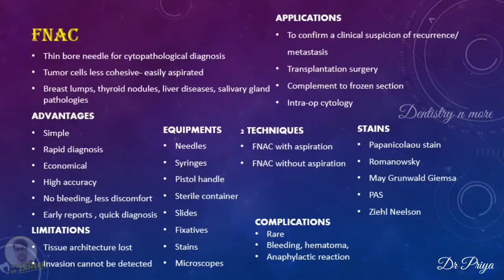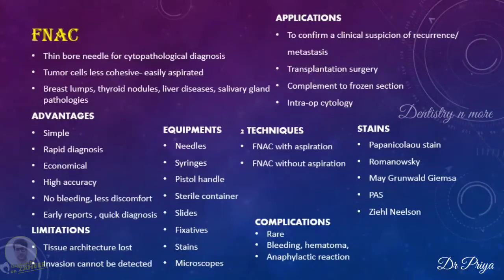The equipment required for FNAC is very simple. You need needles — routinely 22 to 23 gauge needles are used — and syringes of about 20 ml, a pistol handle, and a sterile container containing physiological saline or Hanks' balanced solution. You need slides which are clean, dry, and free of any grease. Fixatives such as 70 to 90 percent ethanol, Carnoy's fixative solution, 10 percent buffered formalin, and glutaraldehyde are commonly used. You also require certain stains and a microscope.